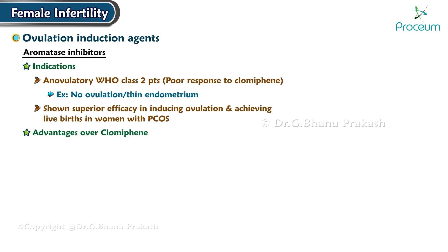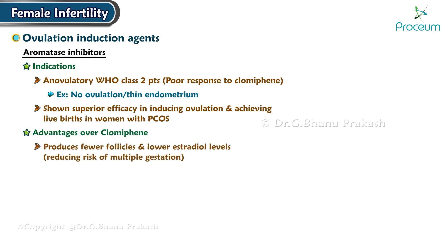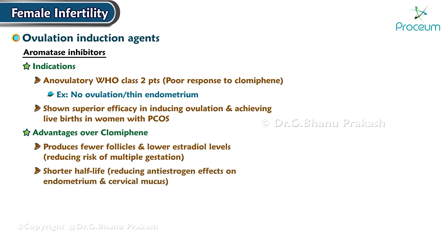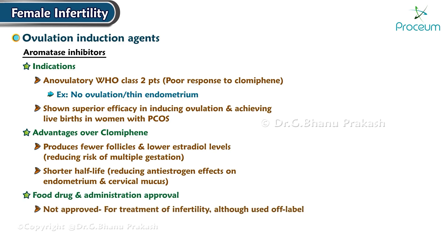Advantages over clomiphene: Aromatase inhibitors produce fewer follicles and lower estradiol levels, reducing the risk of multiple gestation. Also, they have a shorter half-life, reducing anti-estrogen effects on the endometrium and cervical mucus. Regarding Food and Drug Administration approval: aromatase inhibitors are not approved by the FDA for the treatment of infertility, although they are used off-label for this purpose.